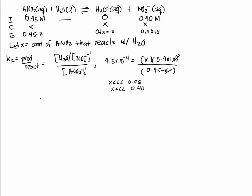4.5 times 10 to the negative 4 equals X times 0.40 over 0.45. We are solving for X, so we rearrange and cross multiply. X then becomes 4.5 times 10 to the negative 4 multiplied by 0.45 divided by 0.40.